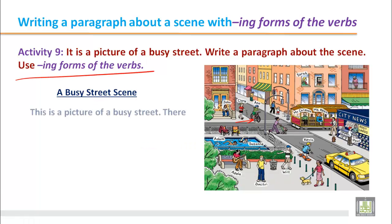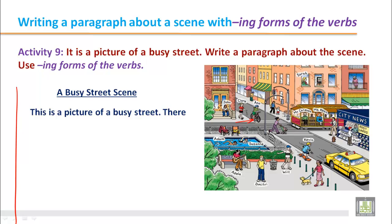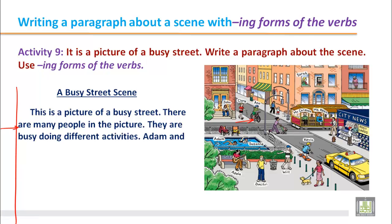Start the paragraph this way: think of the margin of the page and give an indentation of about five letters — a space between the margin and the first word of the first line. This is a model paragraph. You can start this way: 'This is a picture of a busy street. There are many people in the picture.' For the second line, there will be no indentation; you write near the margin with no blank space before the first word.